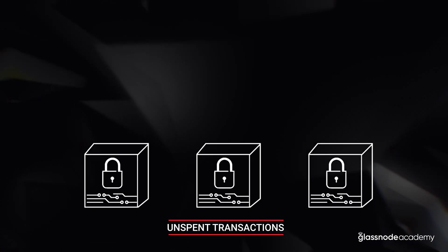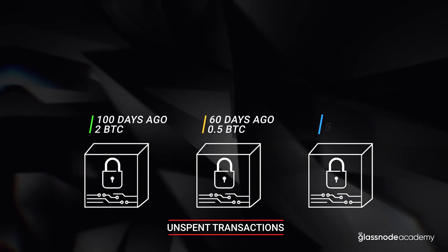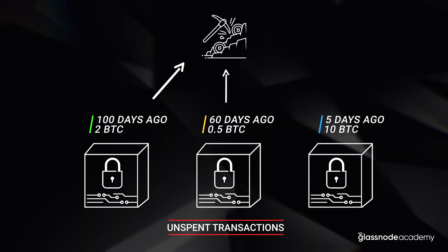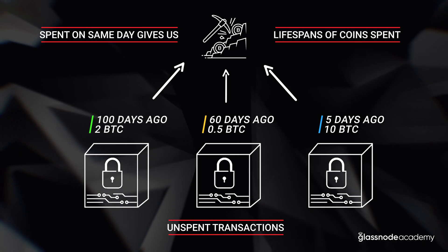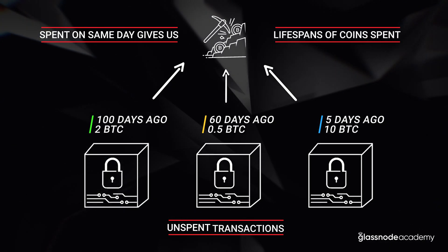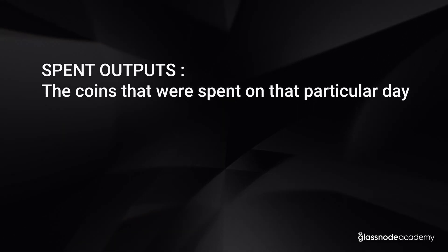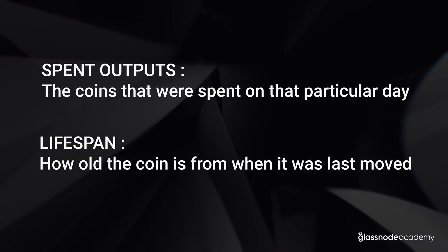Very simply, if we've got three unspent transactions on the network — one was created 100 days ago, one was created 60 days ago, and one created five days ago for varying amounts of BTC — when those are all spent on the same day, we've got lifespans of 100 days, 60 days, and five days. It ignores the actual volume of coins and purely looks at how old the coin was from when it was first created to when it's been spent. That's the concept of spent outputs: the coins spent on that particular day, and the lifespan is how old the coin is from when it was last moved.